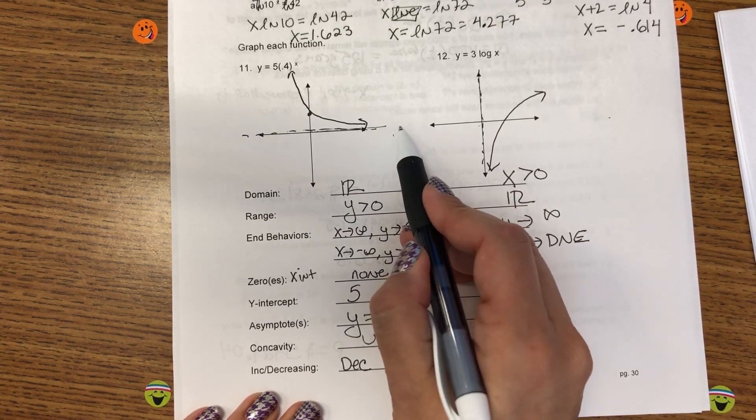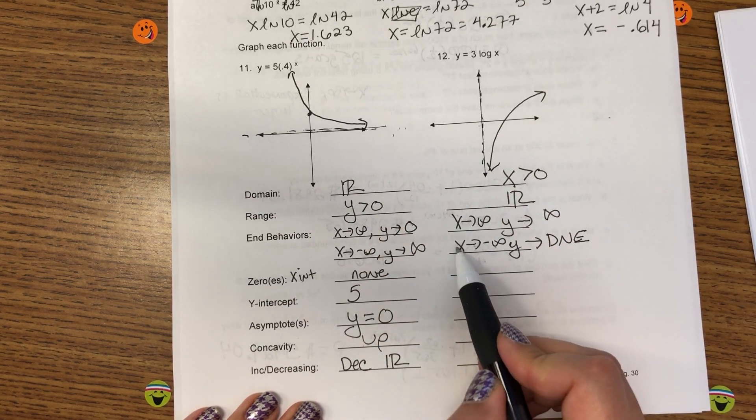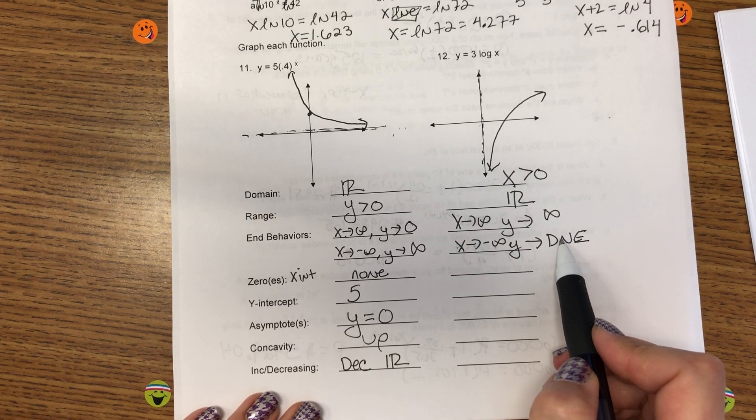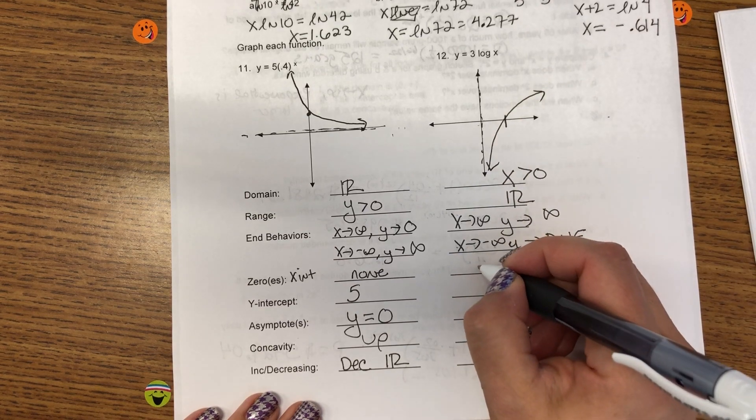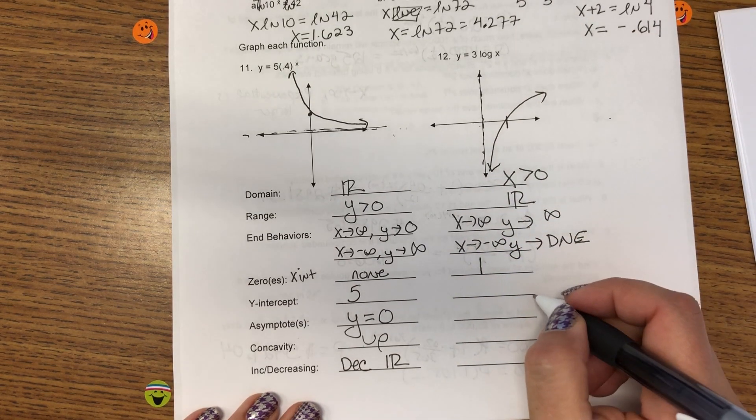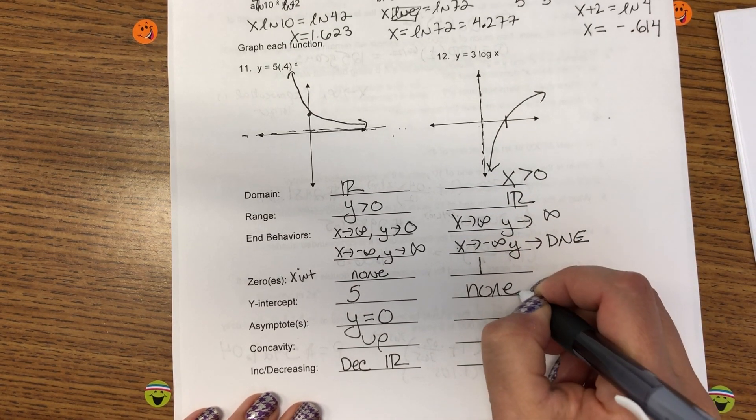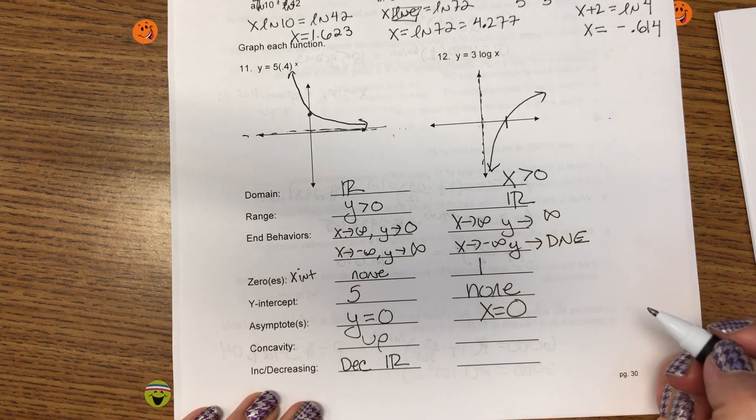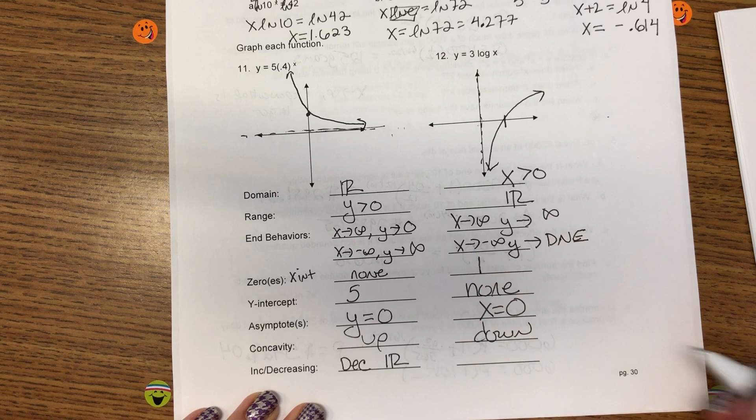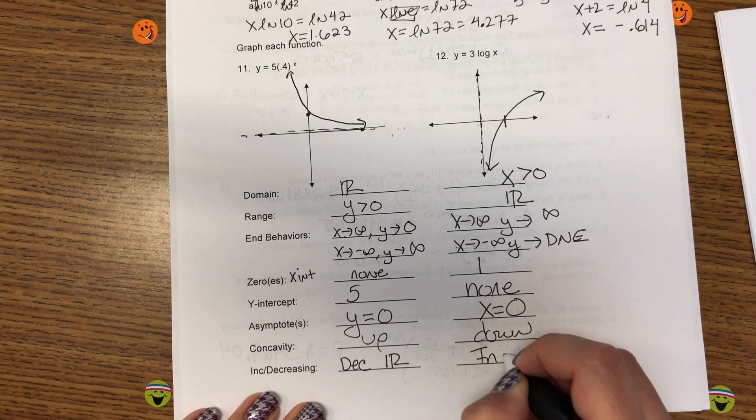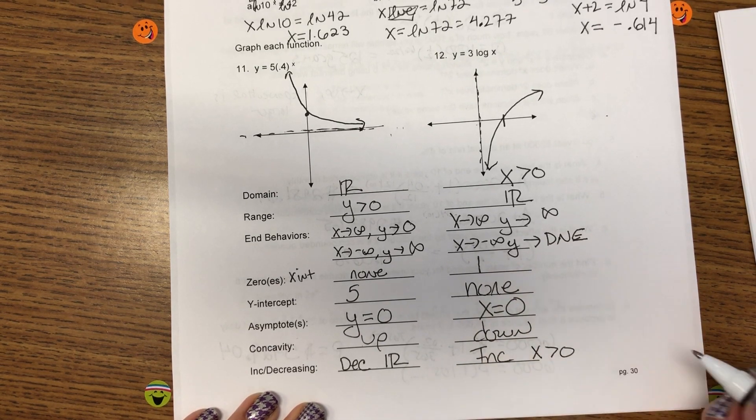For end behavior, as x goes to infinity, y goes to infinity. As x goes to negative infinity, well, that does not exist. The graph does not go to negative infinity, so there is no left-end behavior. The x-intercept is right here at 1. The y-intercept is none. The asymptote is the vertical line, x equals 0. It's bending down, so it's concave down. And it is increasing for every x greater than 0.